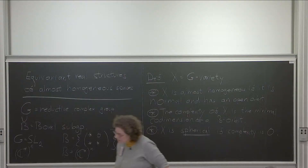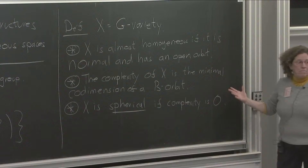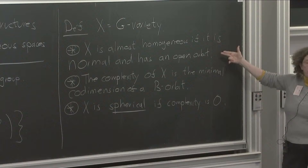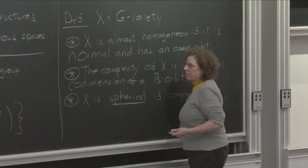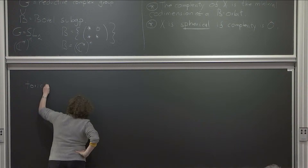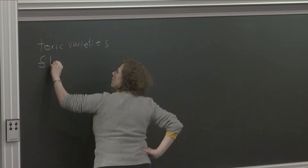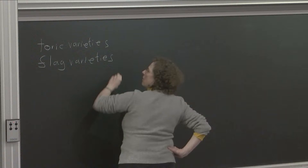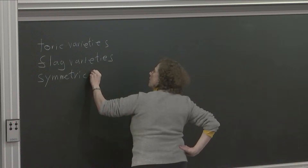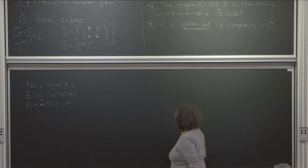So almost homogeneous says there's a G-orbit that's open. But what about a B-orbit? Thirdly, X is called spherical if the complexity is 0. A spherical variety has an open B-orbit, therefore an open G-orbit. So a spherical variety is always almost homogeneous. Examples of almost homogeneous varieties are toric varieties, flag varieties, symmetric varieties, and there are many others. Spherical varieties have been studied as a generalization of toric varieties for quite some time.